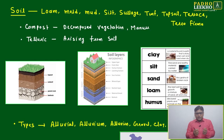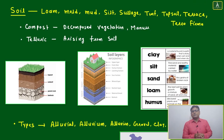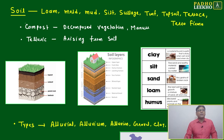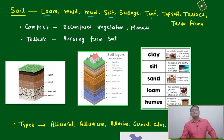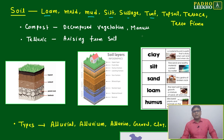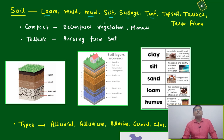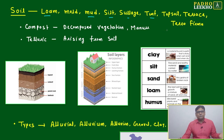Coming closer to the earth's surface, that is called soil. Parallel words or categories for soil include: loam, mold, mud, silt, sillage, turf, topsoil, terrace, and terraform. If any of these words appear, you can directly say they are related to soil.